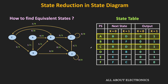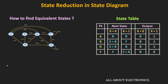Here we will remove the C state. Similarly, if you see, the B and the E states are also equivalent. Because for x equal to 0 and 1, both are going to the same next state, and their corresponding outputs are also the same. So we can say that B and E are equivalent states, and therefore we can remove one of them. Here we will remove the E state. That means in the state table, we will remove C and E. We can replace E with B and replace C with A. This is the reduced state table after removing the equivalent states, and based on this reduced state table, this is the reduced state diagram.